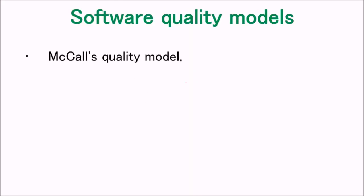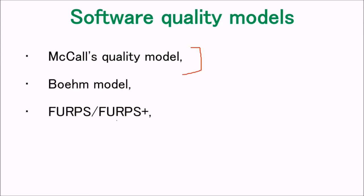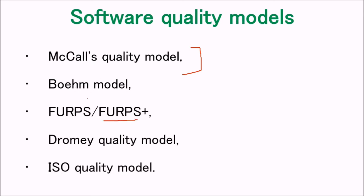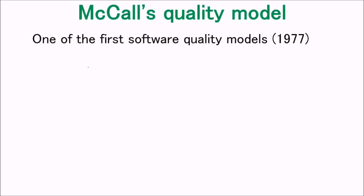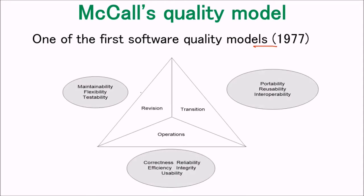There are several models of software quality: McCall's quality model, Boehm's model, FURPS or FURPS Plus, Dromey's quality model, and ISO quality models. McCall's quality model is one of the first quality models, dating back to 1977, and is also called McCall's triangle of quality.